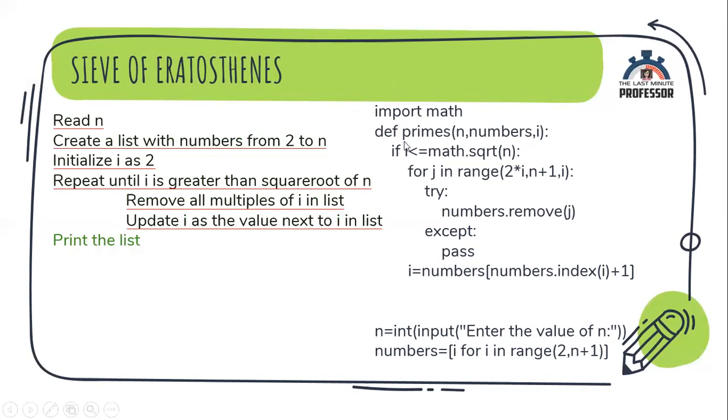Since this is in an if, it will be executed just once. By the completion of this, what am I supposed to do? Again, call this with a new updated i value. So, I am calling the same function primes n numbers i. This is a recursive function call. This gets repeated till this condition is satisfied.